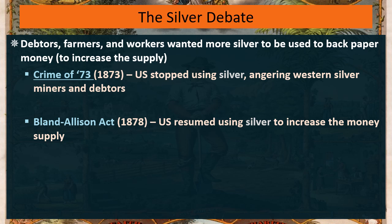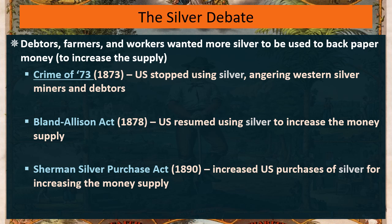Rich people were unhappy — their value of money had gone down. And in 1890, another act increased the purchasing of silver, further increasing the money supply.